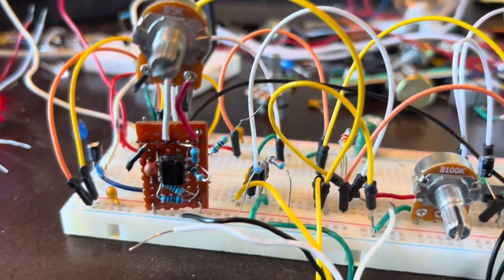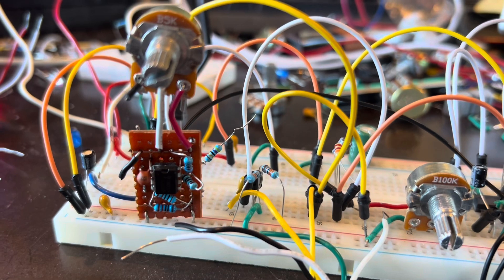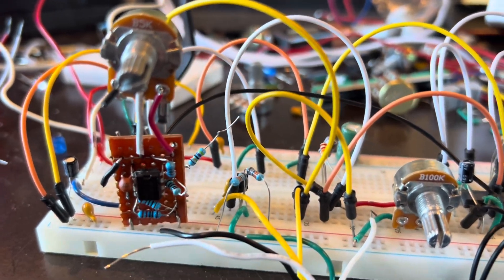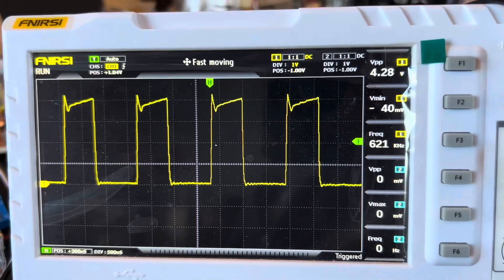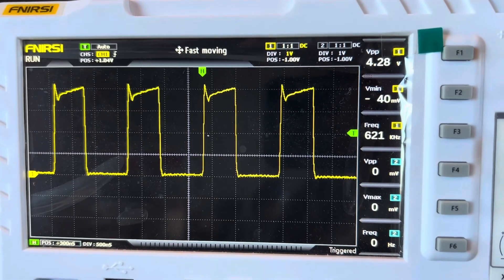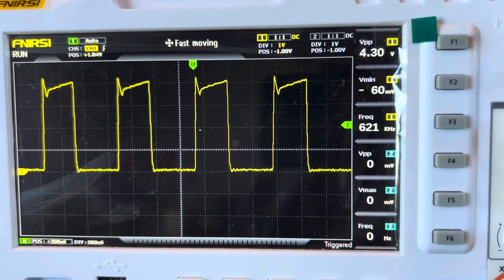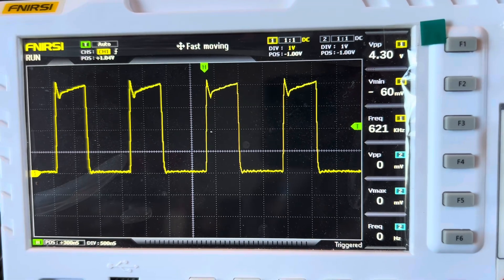This little 555 timer circuit that I built before, it's a TLC 555, that makes a steady 621 kilohertz waveform, and it's adjustable.